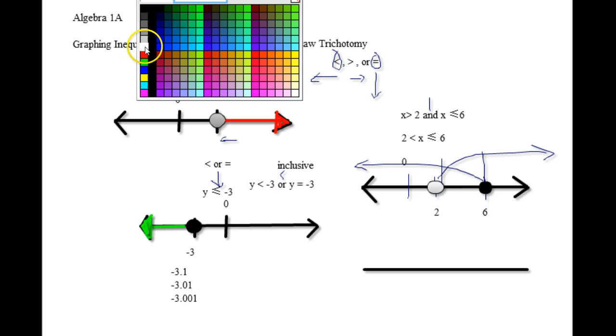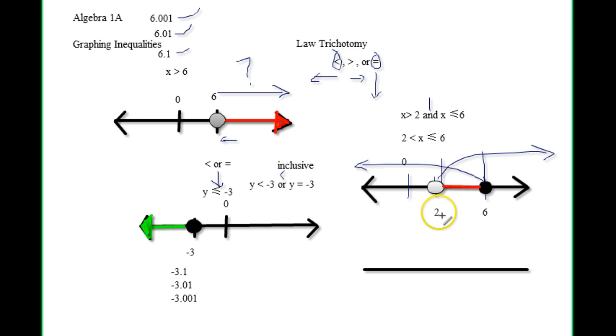So my answers are going to be everything from really close to 2 all the way up to and including 6. So my answer is actually the red portion. So that's how you graph that when you take a look at this.